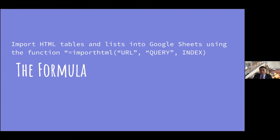Once you write ImportHTML and open the parentheses, Google Sheets will start suggesting options — just type it all out. The first thing you need is the URL. Whatever page the data exists on, copy it and put it in the first position wrapped in quotes. After that, you put your query, then your index. The index is basically the position you believe the data is in. We'll talk about figuring that out as we walk through examples.